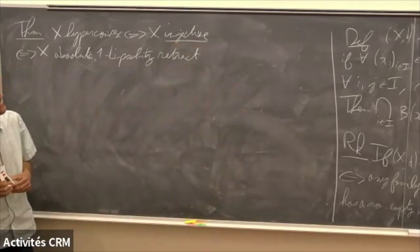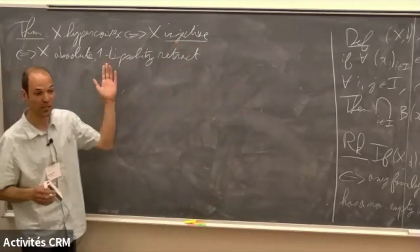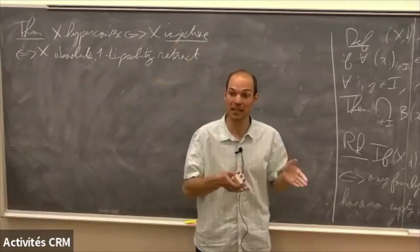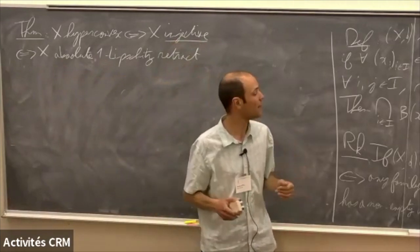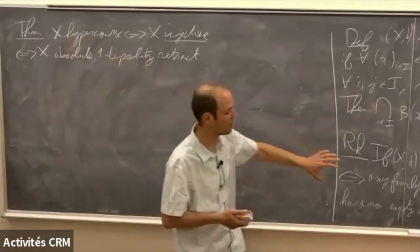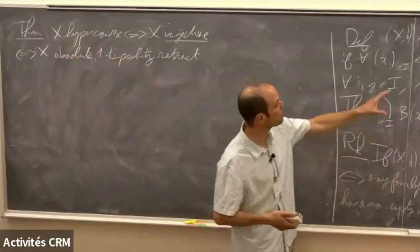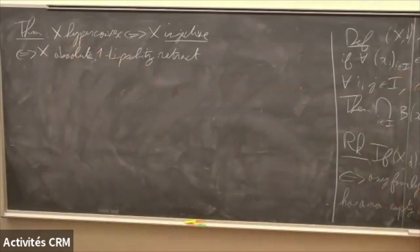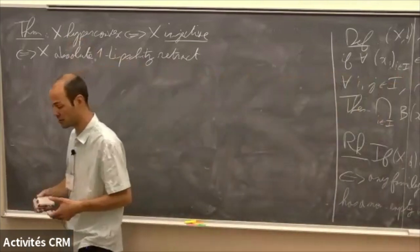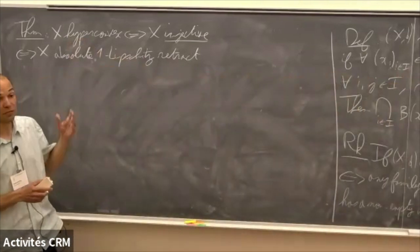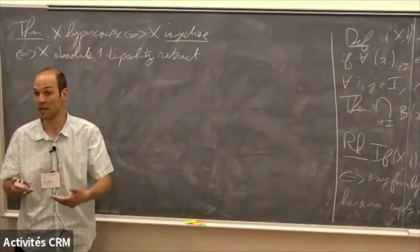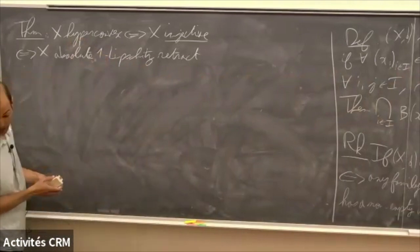It's great because we see that we have a very interesting object when we have many equivalent simple definitions. In practice, checking hyperconvexity — the intersection of balls — is somewhat simpler, while checking injectivity and the absolute one-Lipschitz retract property are a bit more advanced. Before giving a proof, I will give some examples.